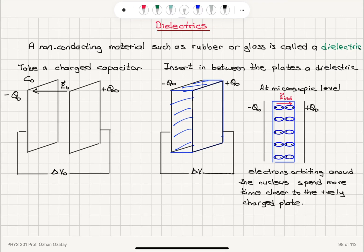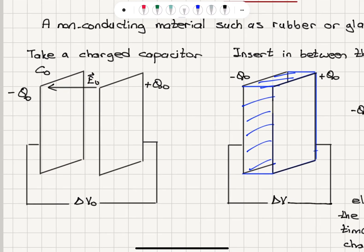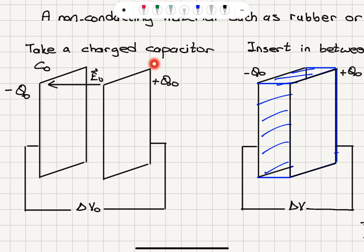Dielectrics: we're going to investigate the effect of inserting a non-conducting material such as rubber or glass in between the two plates of a capacitor. We take a charged capacitor that's charged to Q₀, there's an electric field E₀ in between the plates, a potential difference ΔV₀ between the plates, and capacitance C₀.